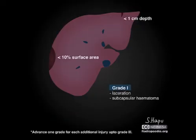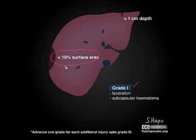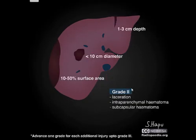This is grade 1. As mentioned, in grade 1 the subcapsular hematoma is less than 10% surface area. Regarding laceration, the depth is less than one centimeter.